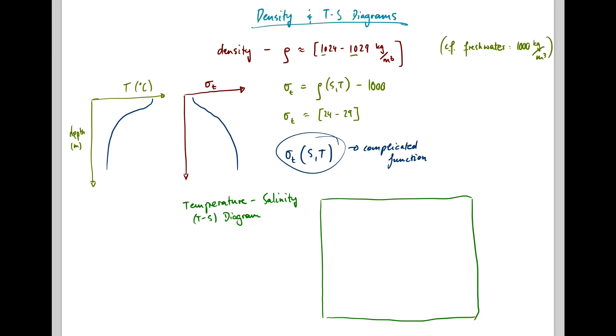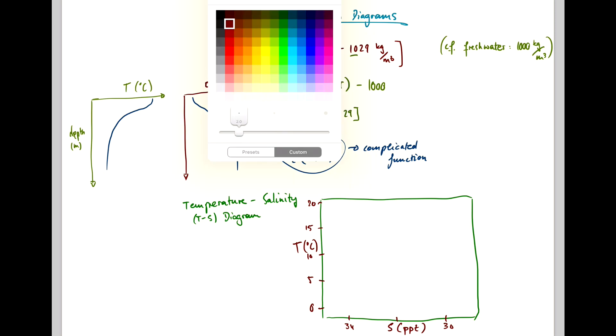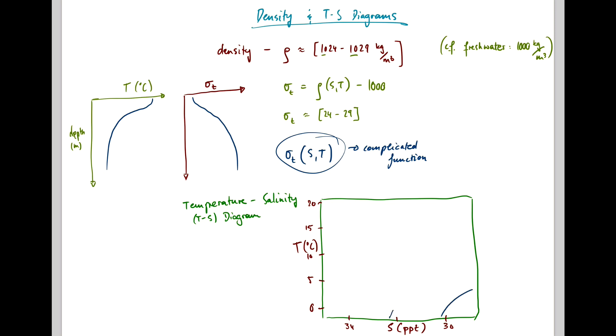TS diagrams have temperature on the vertical and salinity in parts per thousand on the horizontal. And then you enter the function sigma T as contour lines. Lines of constant density take the following shape, roughly.